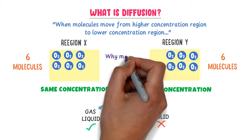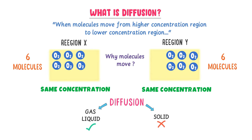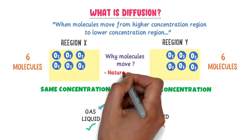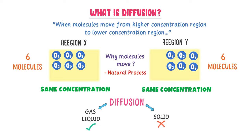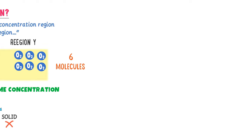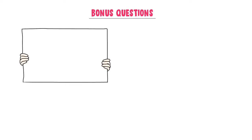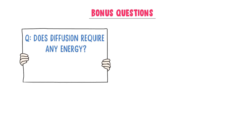If you ask why molecules move from region X to region Y, the answer is simple: diffusion is a natural process in which molecules move from a higher concentration region to a lower concentration region. Bonus question: does diffusion require any energy? The answer is no — it doesn't need any external energy. It is a natural process and also a slow process.